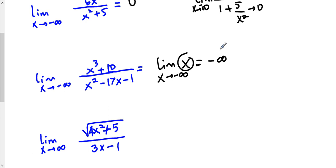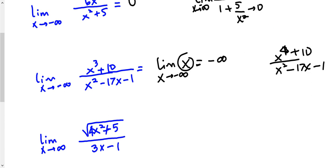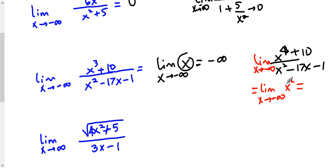What if you had x to the fourth on top and x to the second on the bottom? Same question but x to the fourth instead of x cubed — how would it change? If you look at the leading terms, you get x squared. So you have the limit as x goes to negative infinity of x squared. Think of negative 10, negative 1 million, negative 10 billion — each squared turns into a positive quantity that's getting increasingly larger. In that situation, the answer would be positive infinity. It's very important to analyze this case on a case-by-case basis when the degree of the top is higher than the bottom.